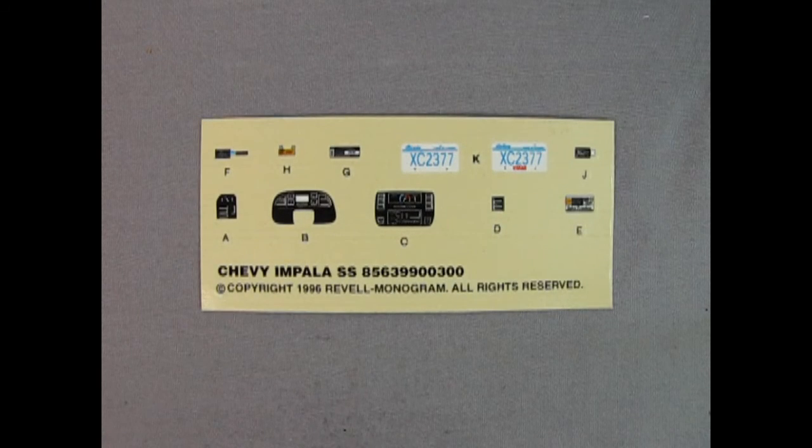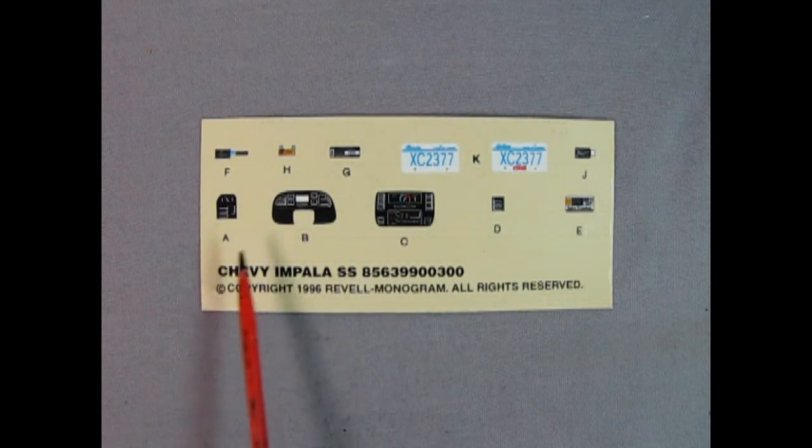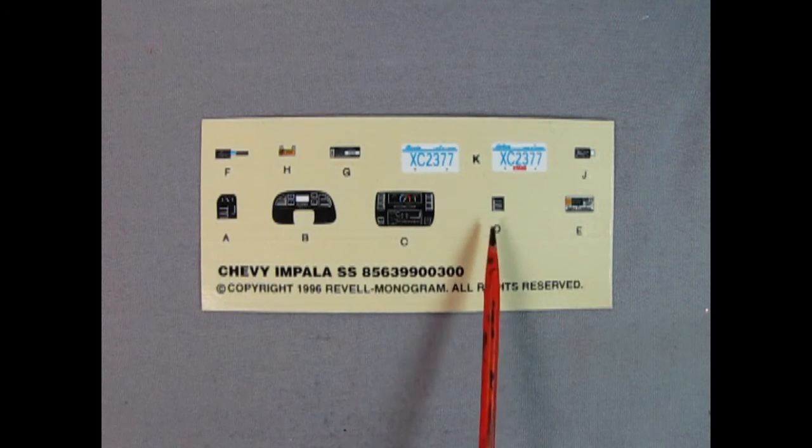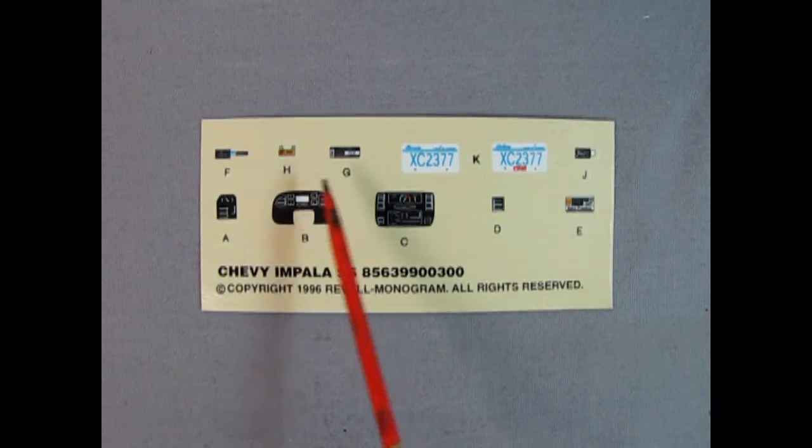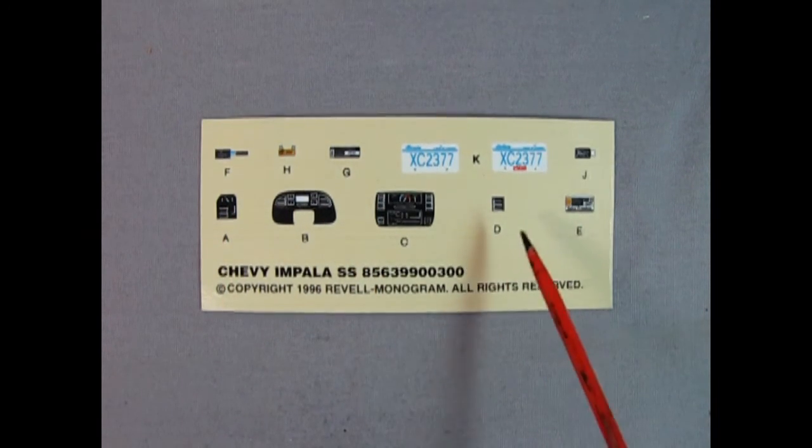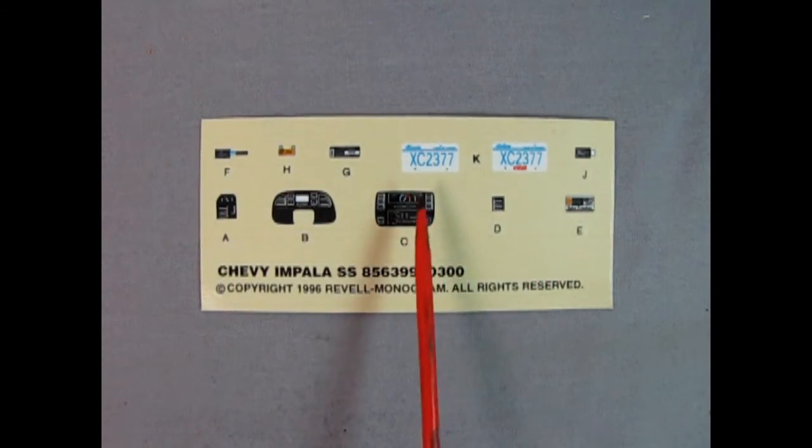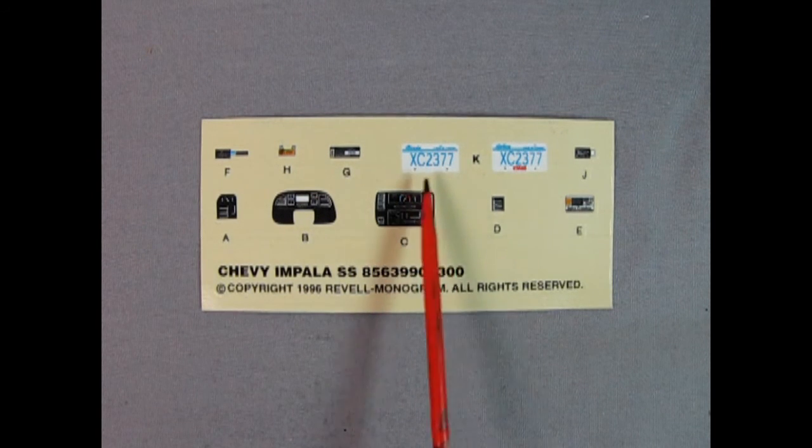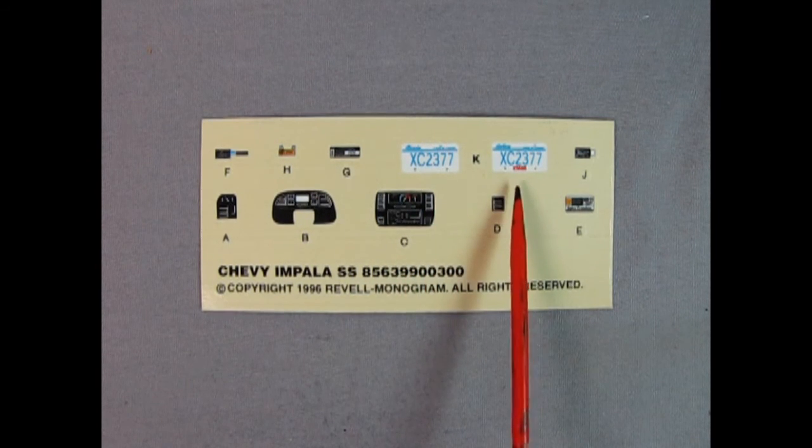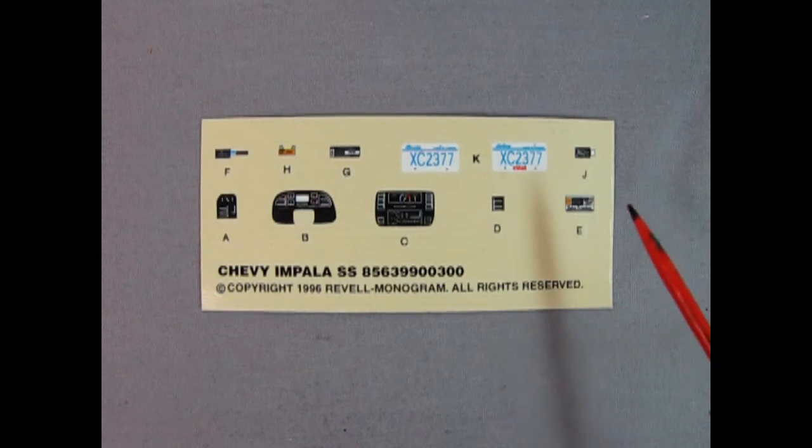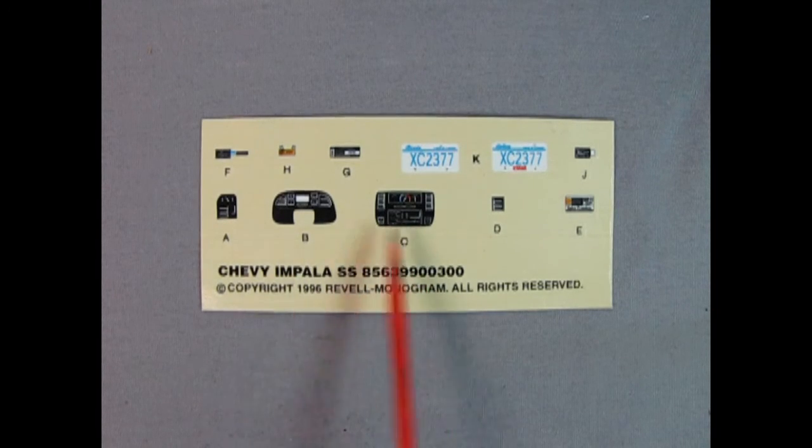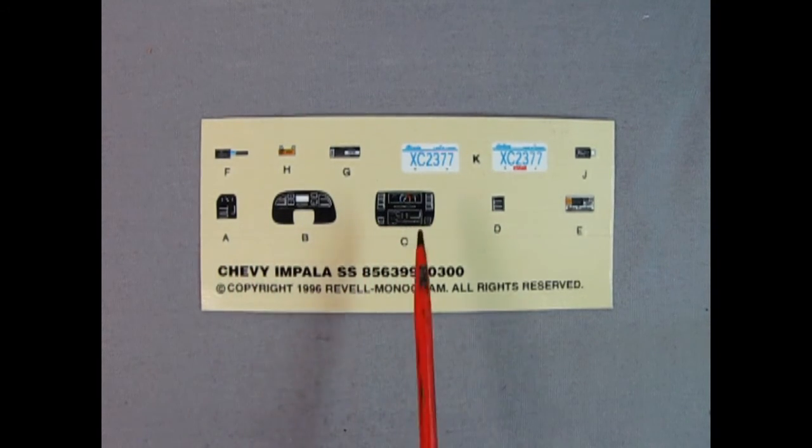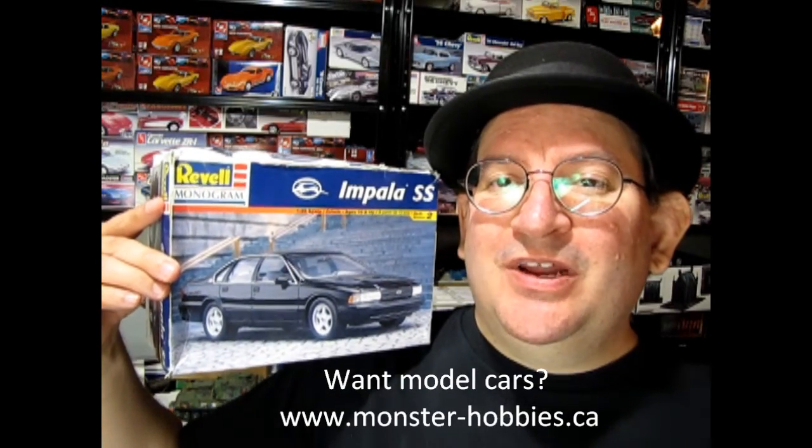And here we have our decal sheet and these three nice ones make up the dashboard as well as that looks like a vent actually and then these are all underneath the hood so again really cool, maybe that's under the hood too. And then you get your Illinois XC2377 license plates and this one has a registration sticker so again really nice detail in here. And look at how good that gauge is right in there that's on our radio, again really really awesome stuff. Thank you so much for sticking with us to the end of the video, I hope you enjoyed my review of the 1994 Chevrolet Impala SS by Revell Monogram.